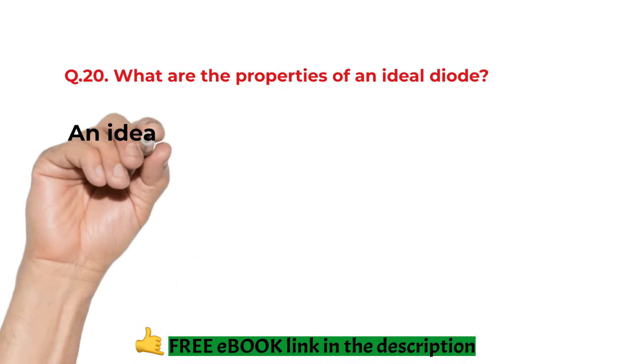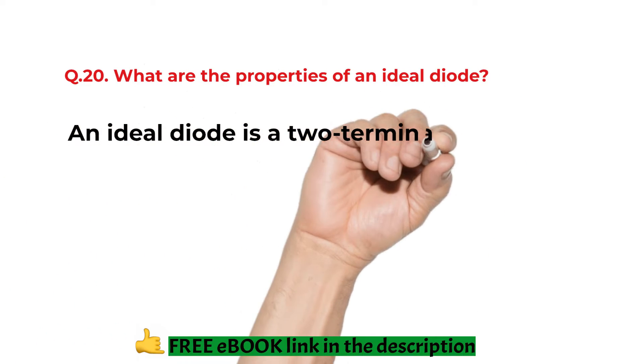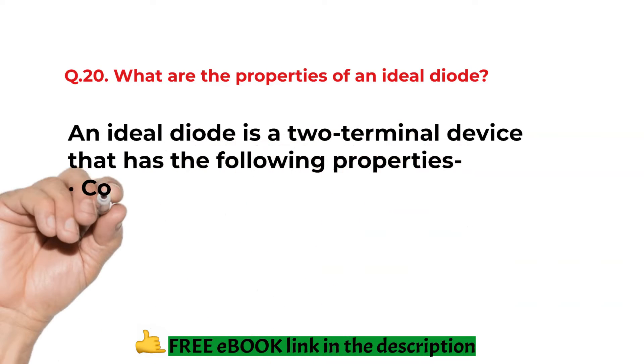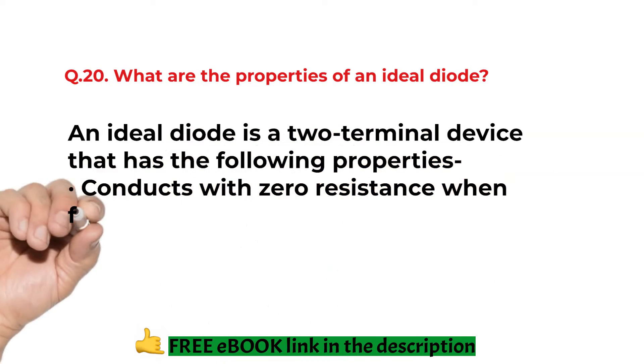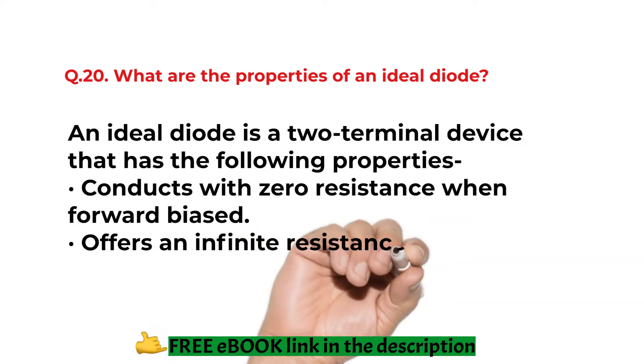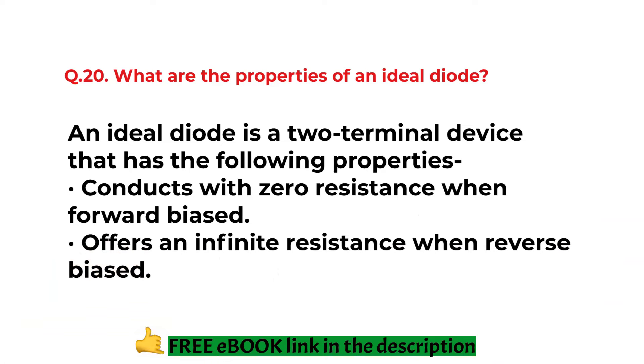What are the properties of an ideal diode? An ideal diode is a two-terminal device that has the following properties. Conducts with zero resistance when forward biased. Offers an infinite resistance when reverse biased.